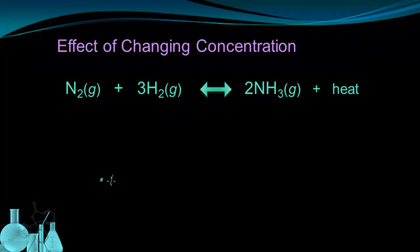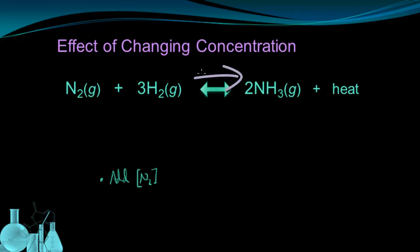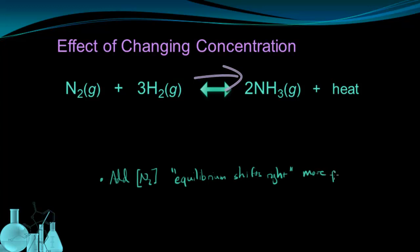Let's look at an example of changing concentration. First, I'm going to add a reactant — N2 gas, nitrogen gas. Because I've added more reactant, I'm going to increase the rate of the forward reaction. Because the forward reaction rate is increased, we see the equilibrium shifts to the right, and the result is that more products are formed.